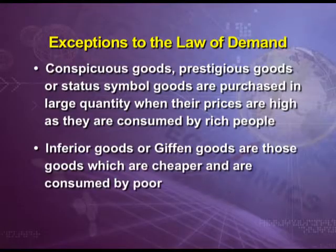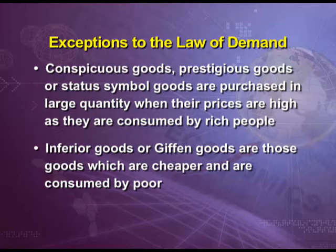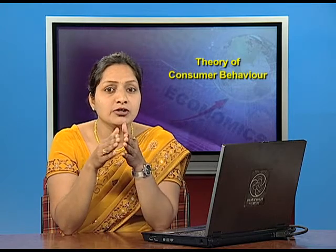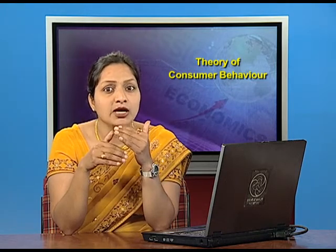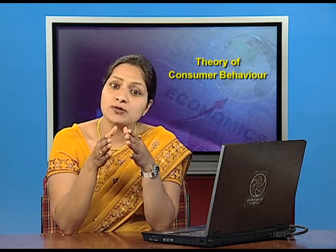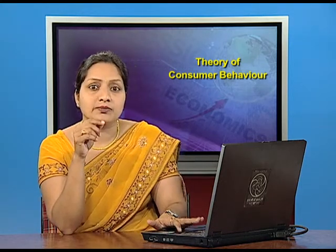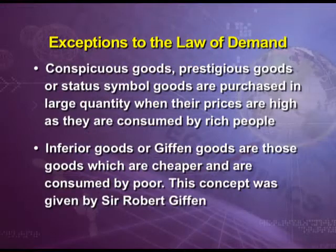The second exception is inferior goods or Giffen goods. Giffen goods are those goods which are cheaper and are consumed by poor people. If their price falls, the purchasing power of the poor increases and they decrease the demand of inferior goods and consume goods which they were not able to afford earlier. This concept was given by Sir Robert Giffen.